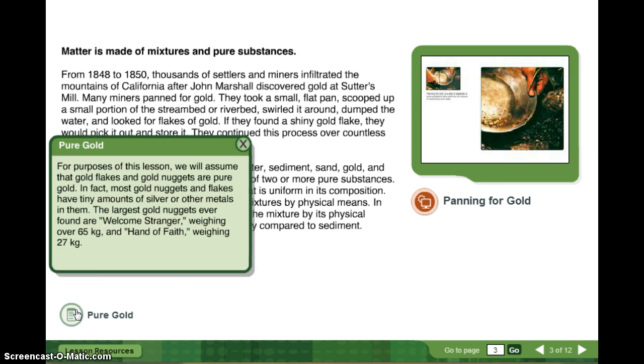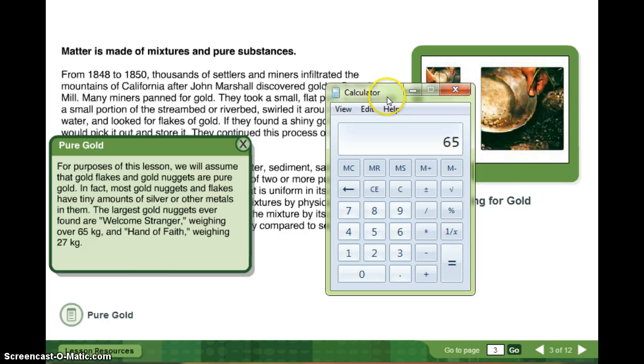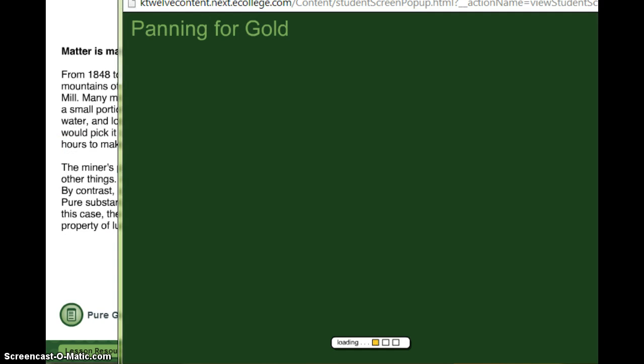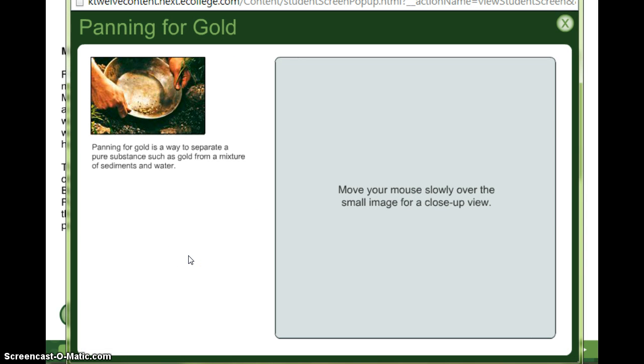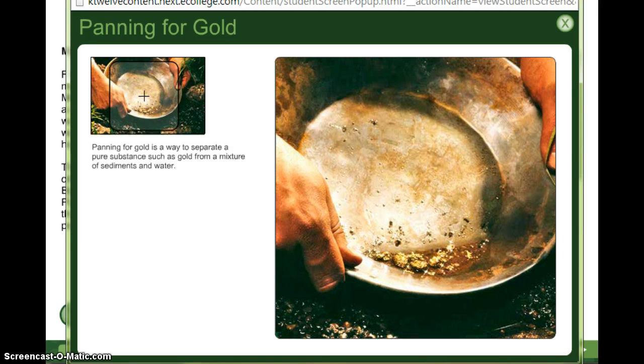Pure gold. For purposes of this lesson, we will assume that gold flakes and gold nuggets are pure gold. In fact, most gold nuggets and flakes have tiny amounts of silver or other metals in them. The largest gold nugget ever found are Welcome Stranger weighing over 65 kilograms and Hand of Faith weighing 27 kilograms. So 65 times 2.2, so 143 pounds, and 27 times 2.2, so about 60 pounds. Panning for gold is a way to separate a pure substance such as gold from a mixture of sediments and water. And so in the pan there's some gold, some water, some dirt, some sand at the bottom.